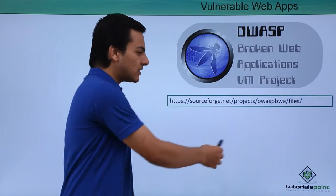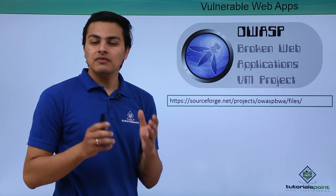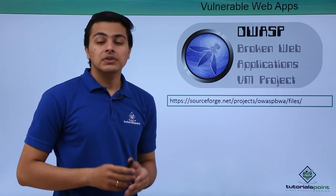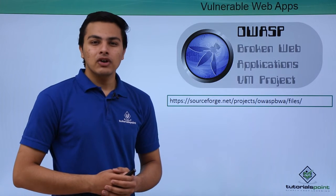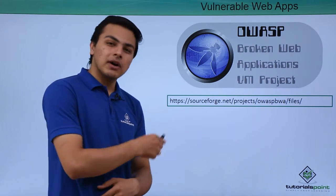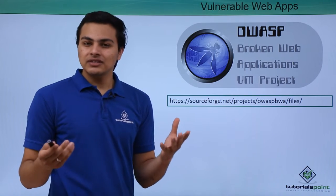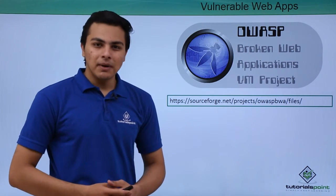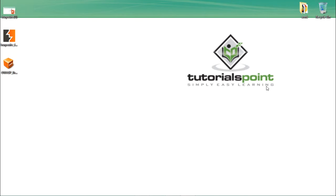The OWASP Broken Web Application virtual machine consists of various web applications which you can use in order to do security testing using BurpSuite or by doing manual testing. Now let's install BurpSuite as well as the OWASP Broken Web Application in order to do manual security testing.